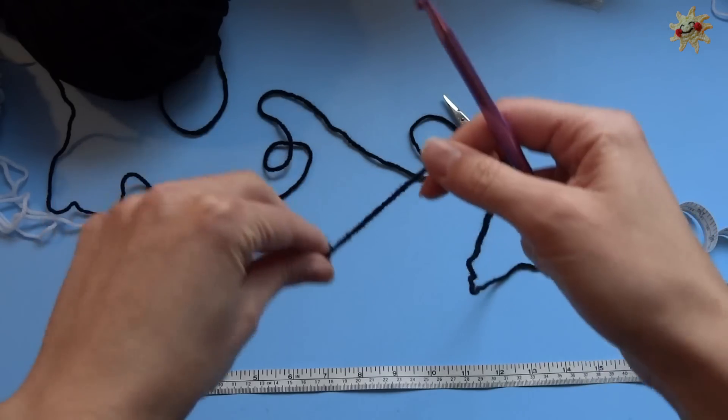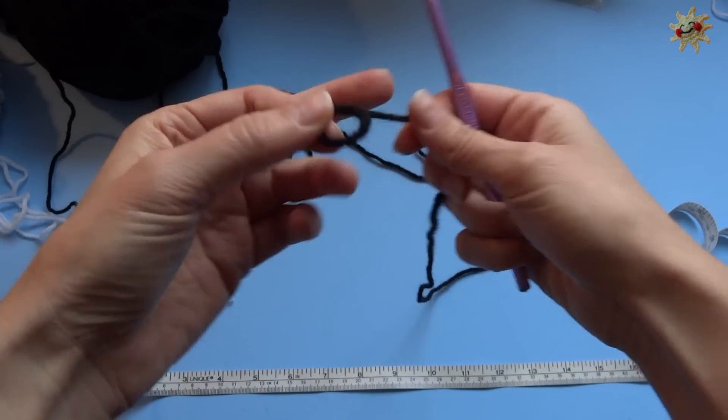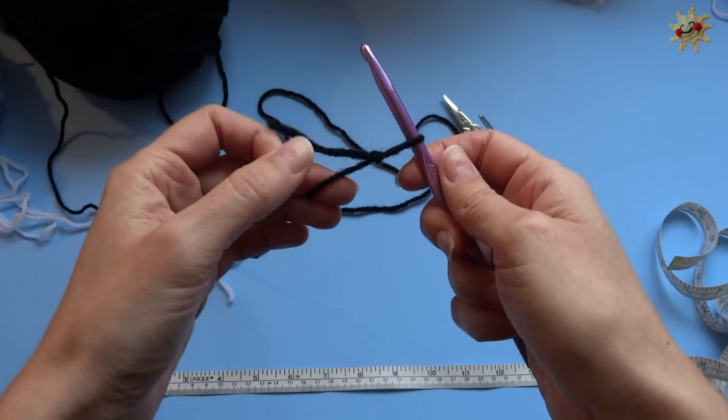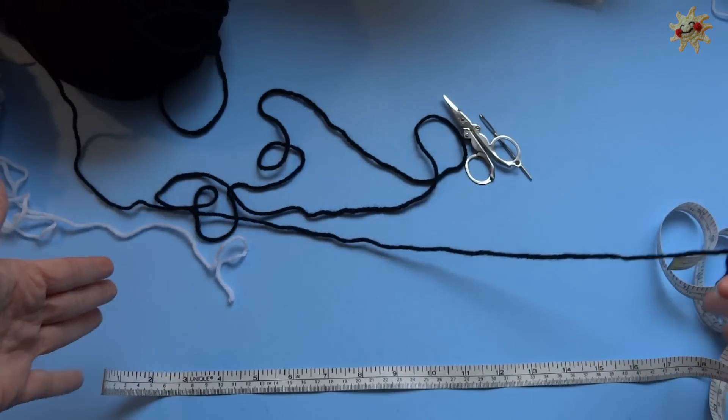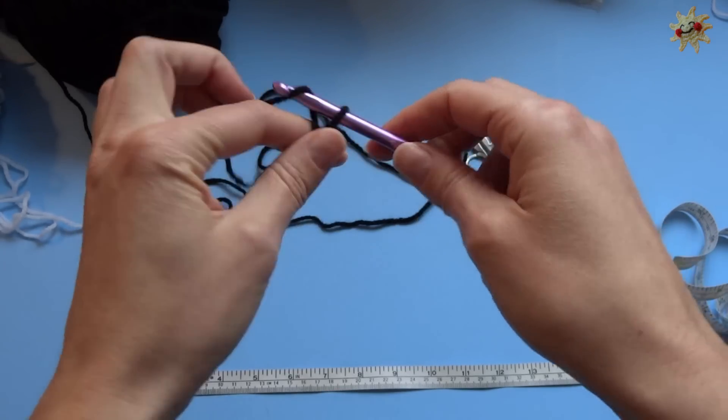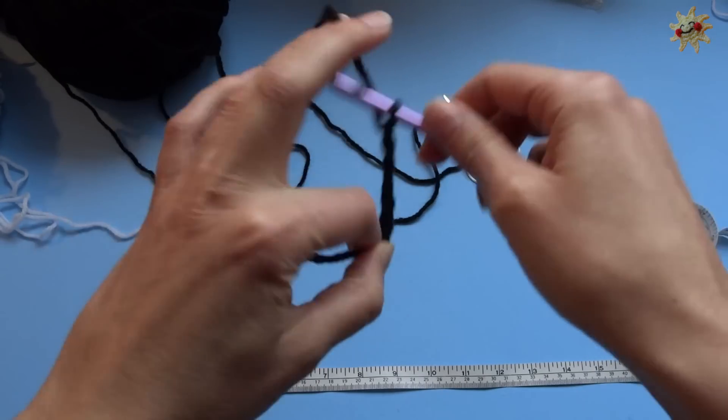I'm going to start with the black and because these are vertical stripes, we are going to crochet the entire length by chaining the whole length of how tall the leg warmers are going to be. So I'm going to start chaining until I have 15 inches worth of chains.